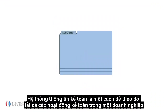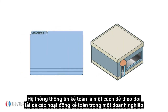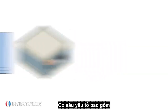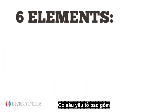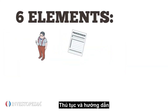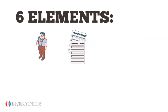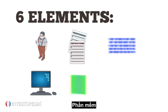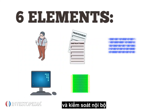An accounting information system is a way of tracking all accounting activity in a business. There are six included elements: people, procedures and instructions, data, hardware, software, and internal controls.